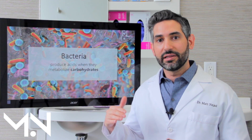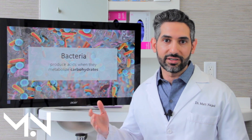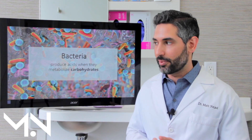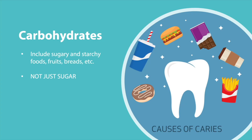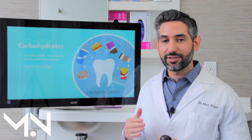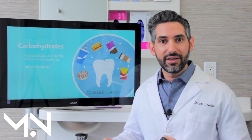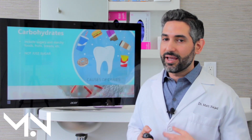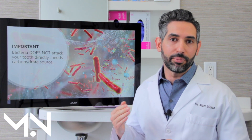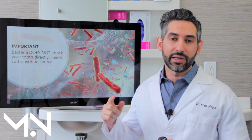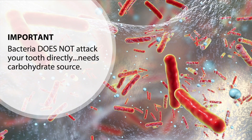It's not the bacteria literally digesting your tooth — it's trying to digest carbohydrates. Carbohydrates are not just sugar; they can include starchy foods and fruits. Any source of carbohydrate is something the bacteria can use for energy, and when they do that they produce acids. The important take-home message is that the bacteria is not going to eat your tooth — it needs a source of nutrition to actually be doing damage.